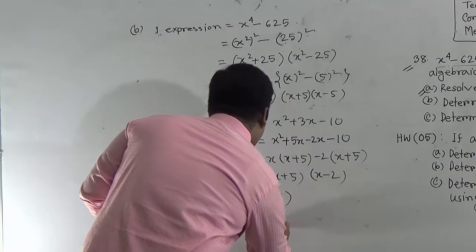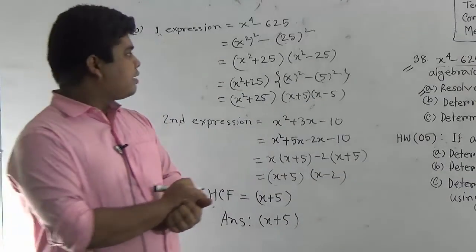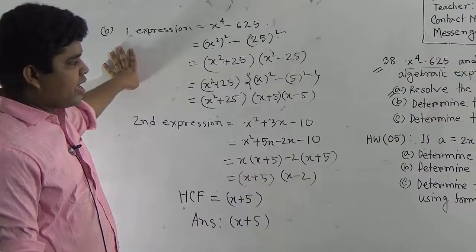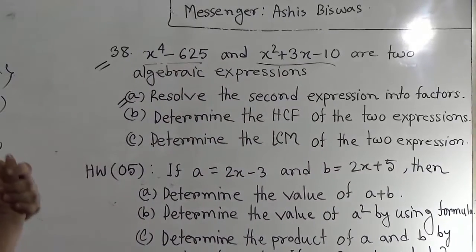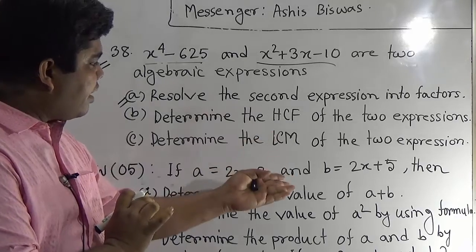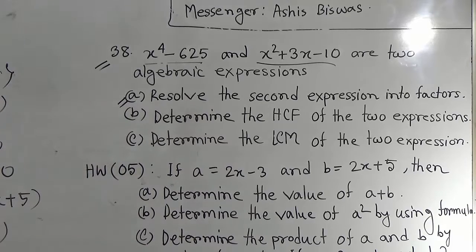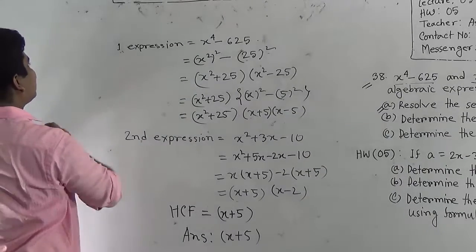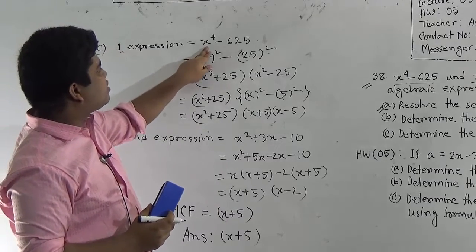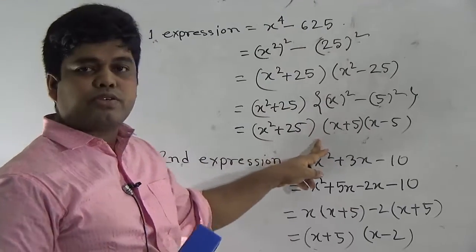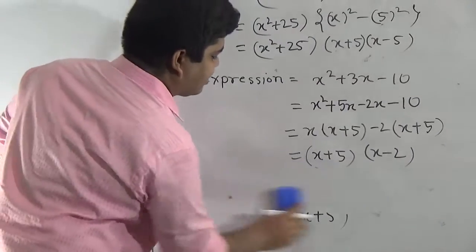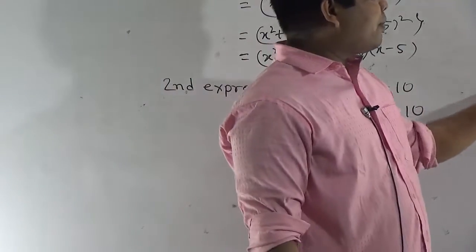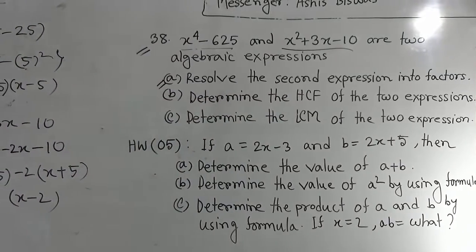I hope you have understood how to find the HCF of these two expressions. So that is the HCF, and now question number C: determine the LCM of the two expressions. My students, in order to find the LCM, you must first resolve both the first and second expressions into factors, just as before. For question C, you first copy the first expression into factors, then the second expression into factors, and then write the LCM of the two expressions.